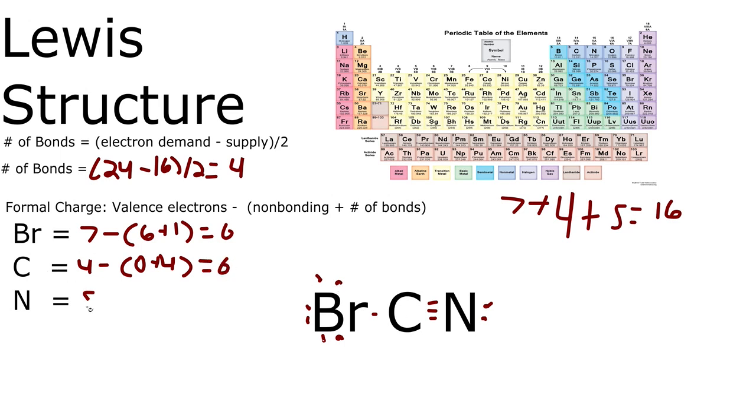Nitrogen has 5 valence. Subtract that by 2 non-bonding and 3 bonds or a triple bond. 5 minus 5 is 0. So there's 0, 0, 0 formal charges. That's the best molecule. This would be your answer.